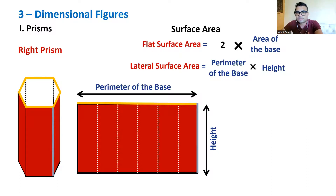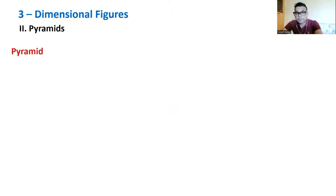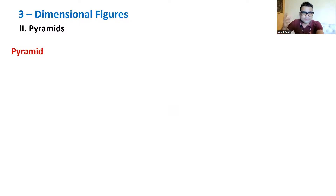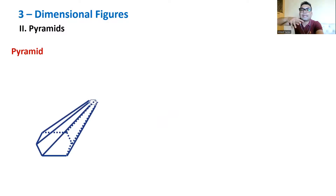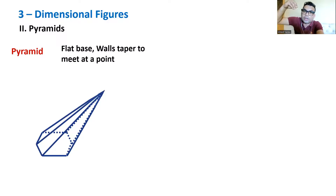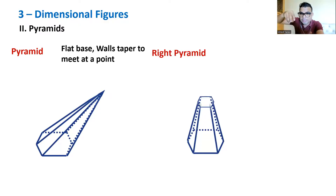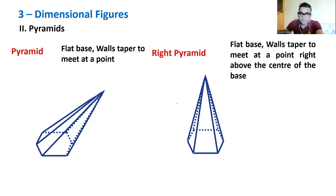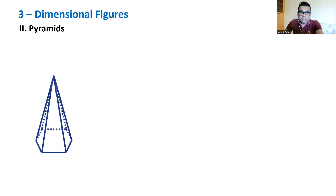Now let's explore pyramids. A pyramid has a flat base with triangular walls that taper and meet at one common point called the apex. In a right pyramid, the apex is exactly above the center of the base — if you join the apex to the base, the line is perpendicular to the base, and that line is the height of the pyramid. Depending on the base shape, we name it: hexagonal right pyramid, triangular right pyramid, and so on.